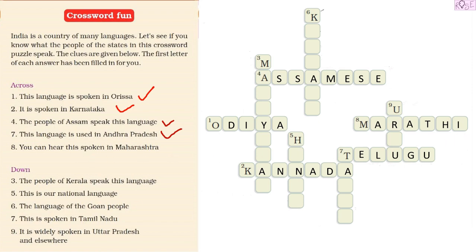We are done with all the across clues. Now we start with the down clues. Down number three — the people of Kerala speak this language. The language spoken in Kerala is Malayalam. We write M, A, L, A, Y, A, L, A, M — Malayalam.